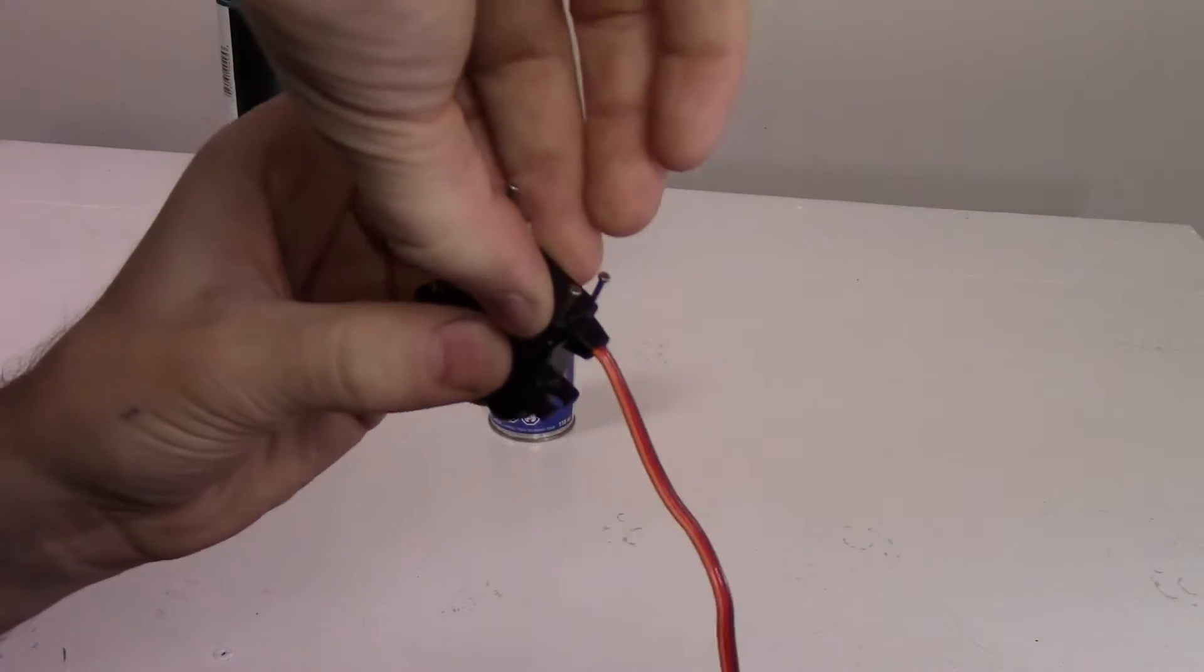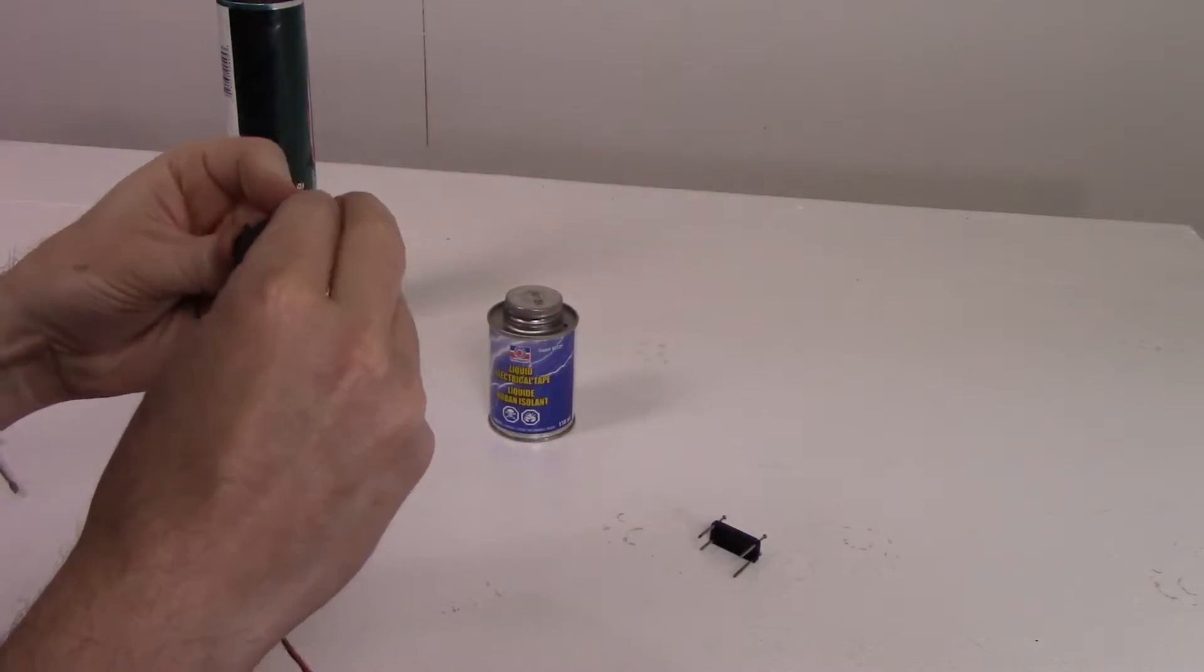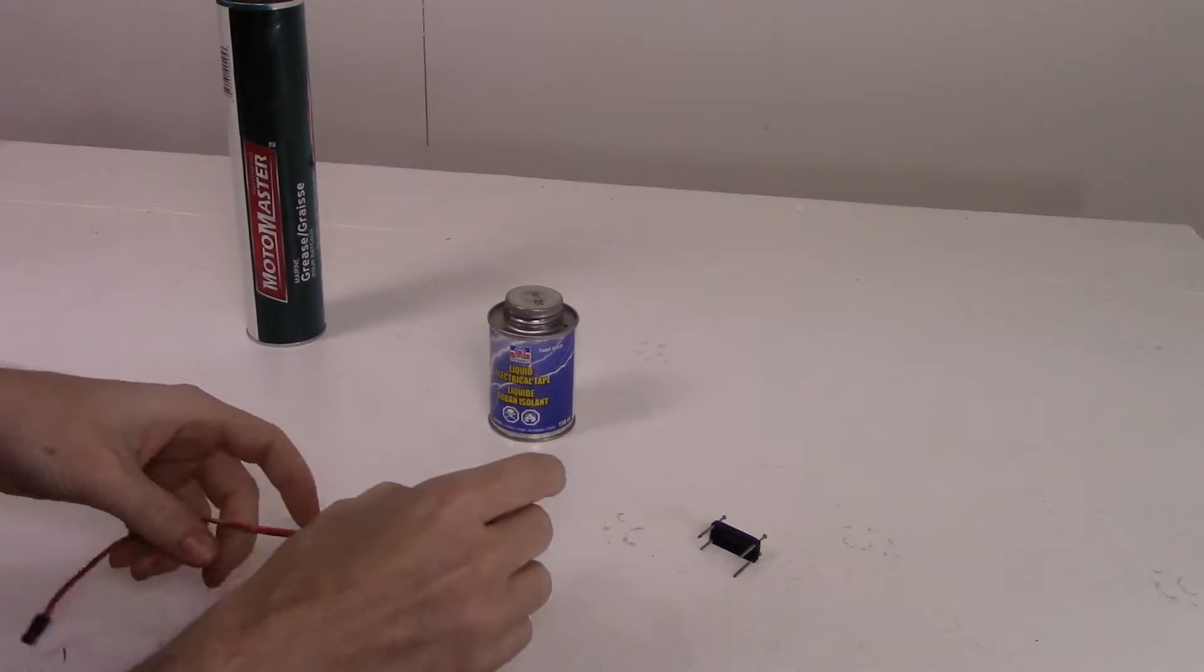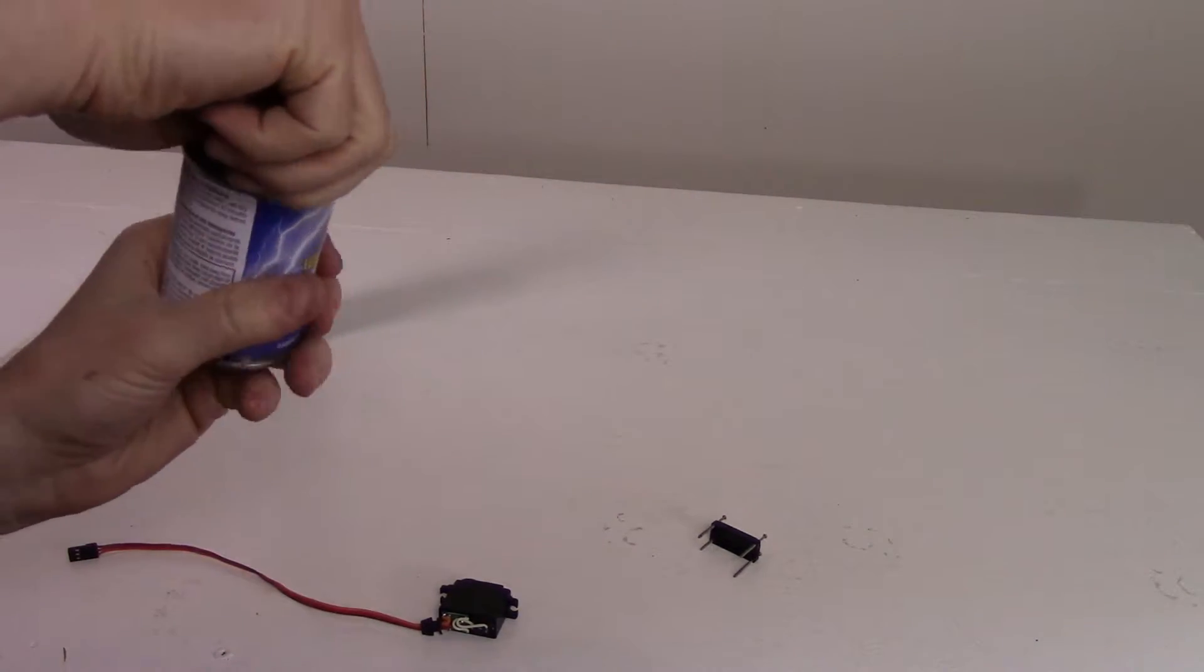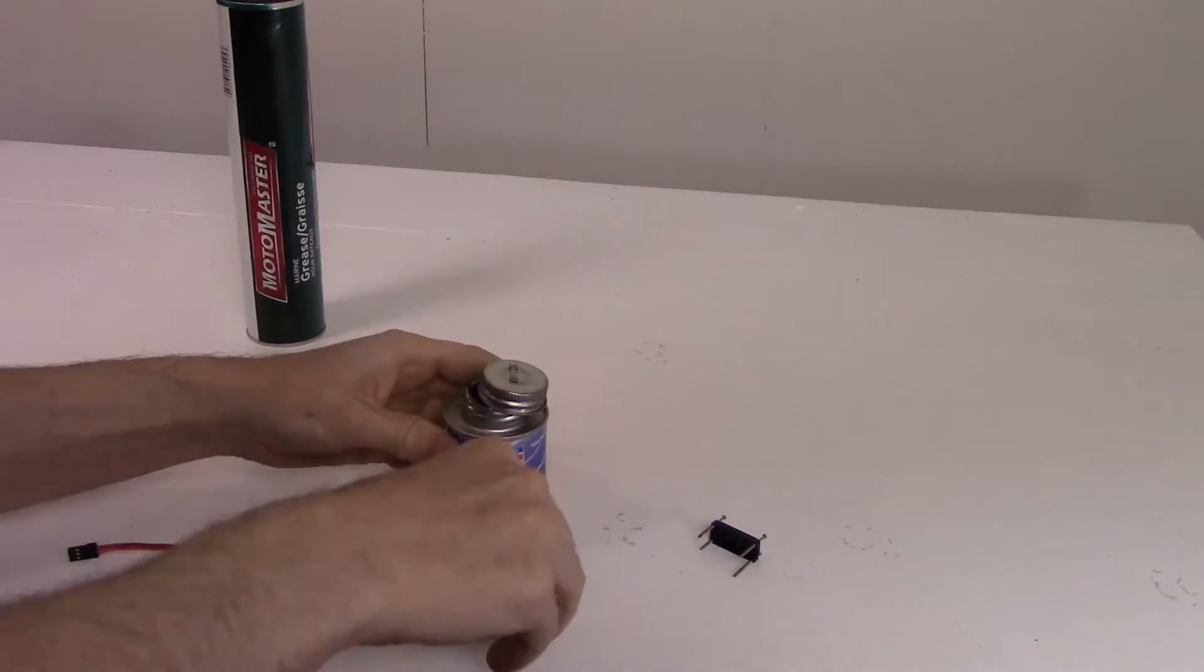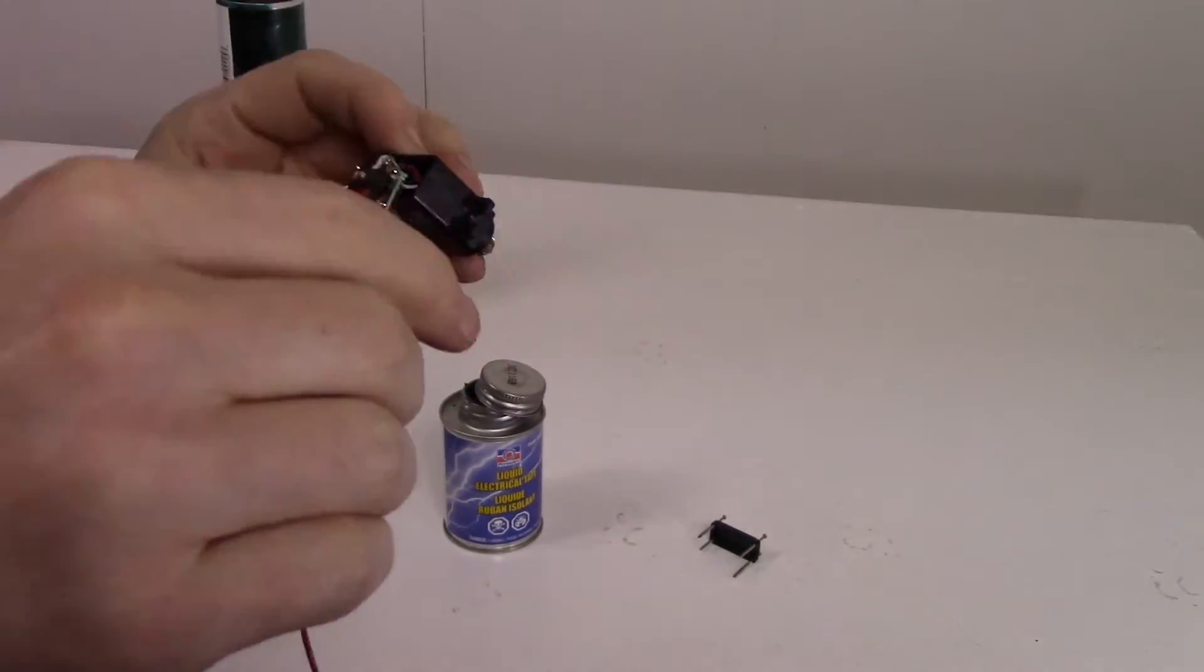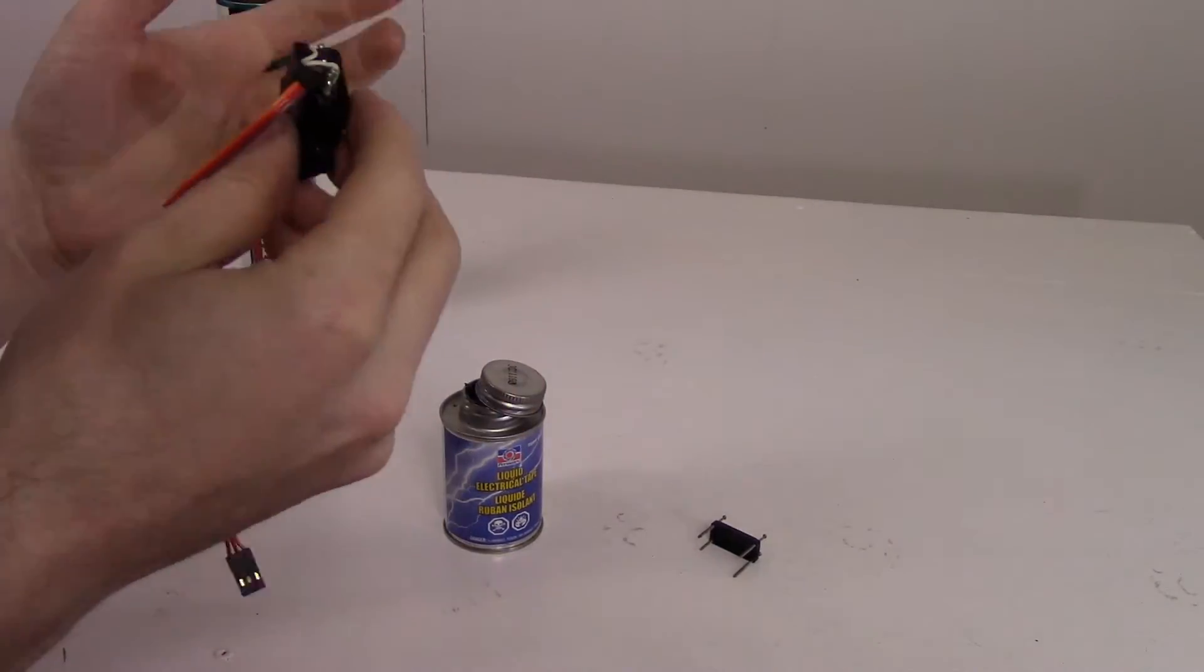Now I'm going to take the bottom cover off. Here's where we're going to use the liquid electrical tape. Some people like to use silicon here and just fill up the inside with silicon. That works good too.